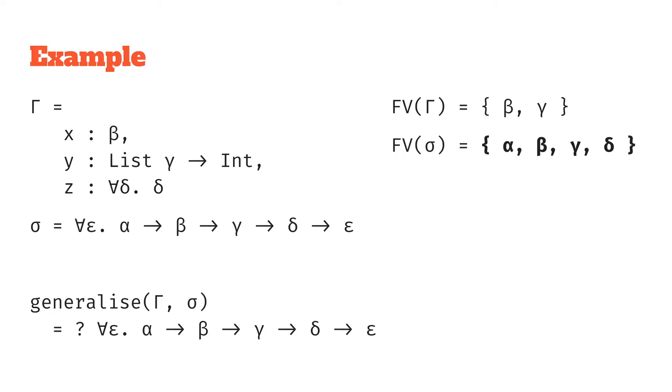Now we have these two, our next question is what's in our type and not in the context? We can just do some basic set difference to figure that out and that is alpha and delta is free in our type but not free in our context. So those are the for all quantifiers we can add to generalize our type and we end up with this type.